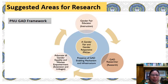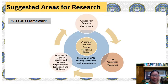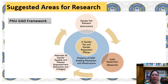On suggested areas for research, maybe we can look at our PNU-GAD framework, where we want to develop a gender fair and gender responsive PNU in the area of instruction, research, extension, and linkages. For instruction, for example, we want to develop a gender fair educator, so you can focus your research on who is a gender fair educator, a GAD researcher in research, or an advocate of gender equality and women empowerment in extension and linkages. We can also focus our research on GAD-enabling mechanisms and infrastructure within the PNU organization or outside, like other higher education institutions or basic education institutions.